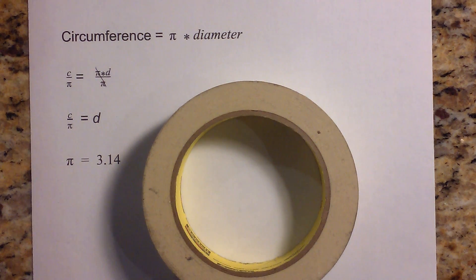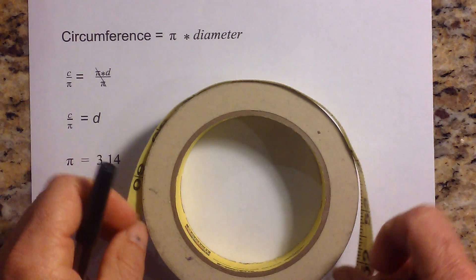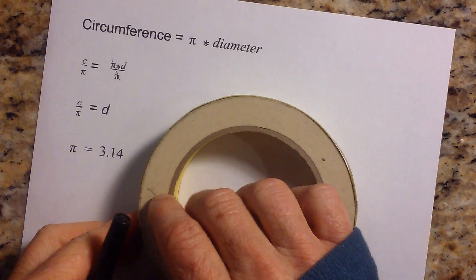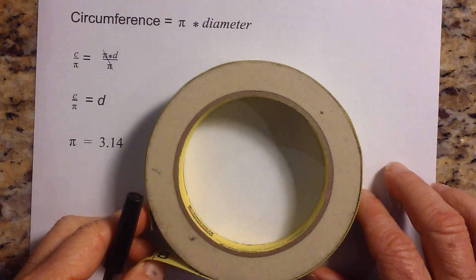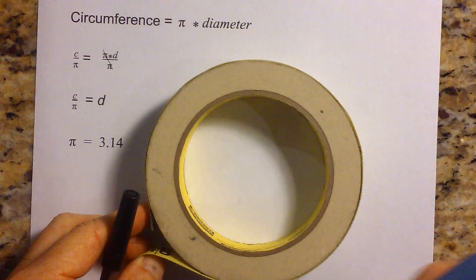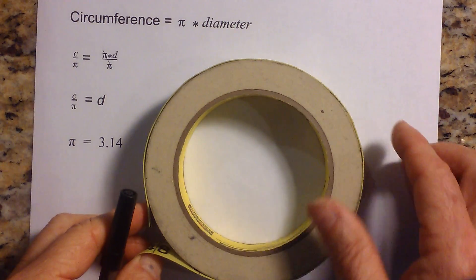And you know, in order to find the diameter if you don't have it, I have a tape measure here, and you just wrap the tape measure all the way around until it goes all the way around the circumference and then you see what the measurement is.